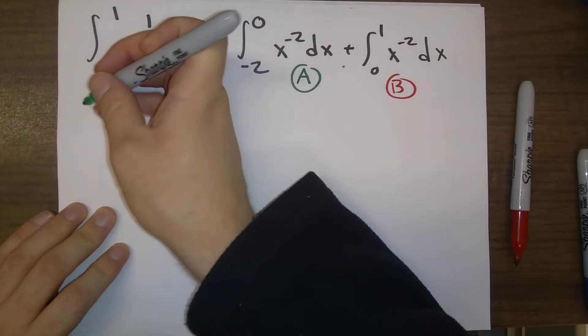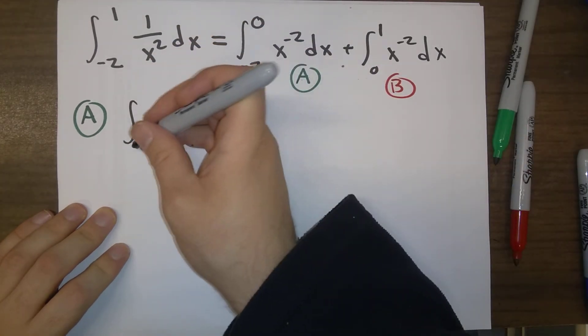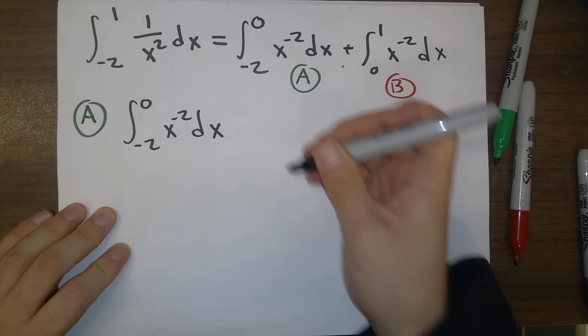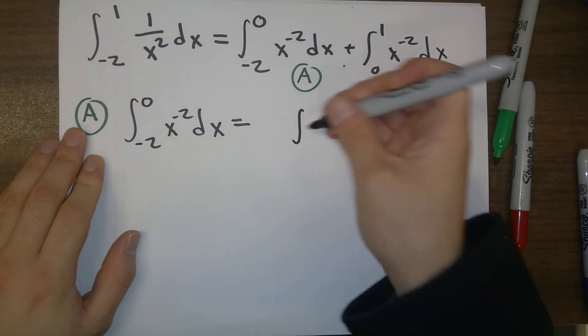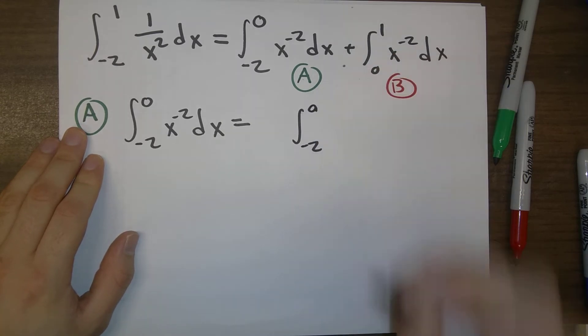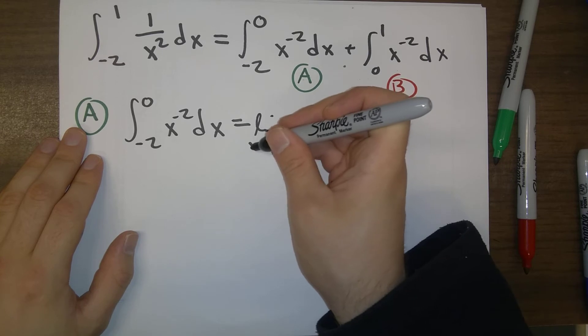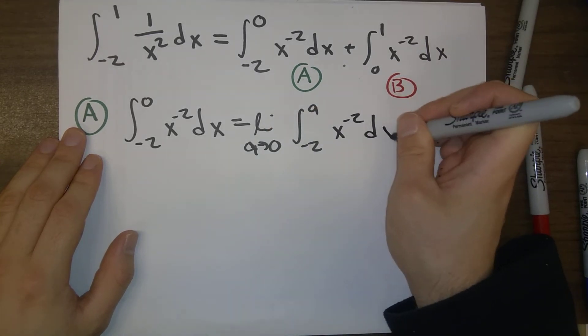So let's start off by looking at A. Okay, so we are integrating minus 2 to 0, x to the minus 2 dx. So we should replace this 0 with some variable. I'll use A here. And we're taking a limit as A goes to 0, x to the minus 2 dx.